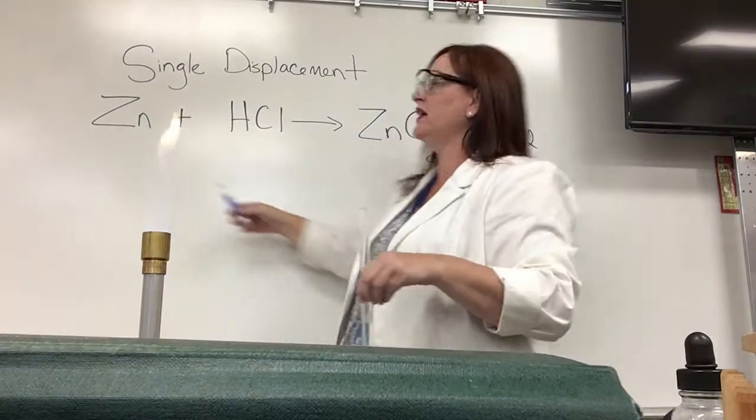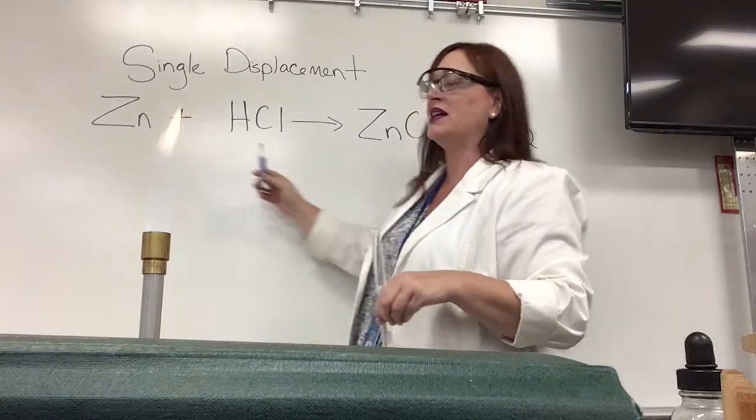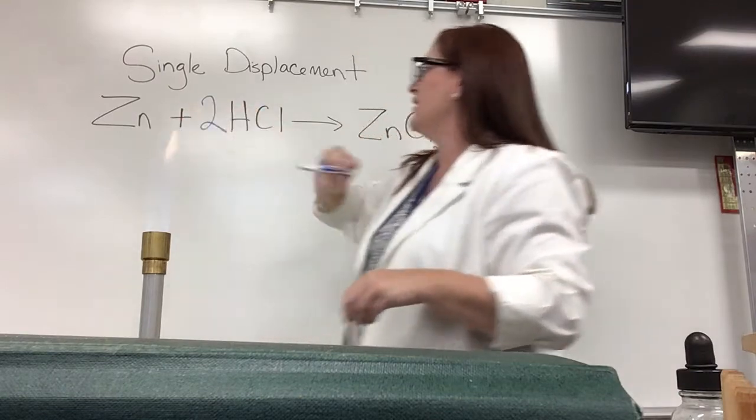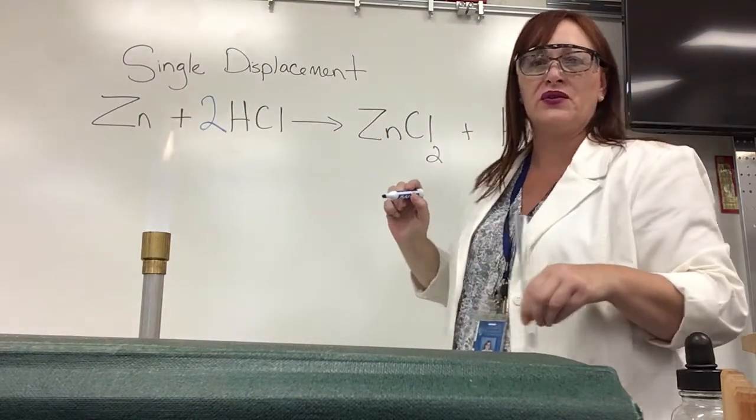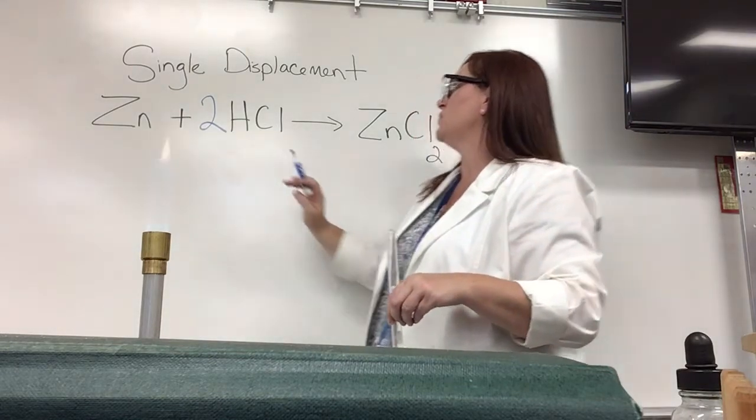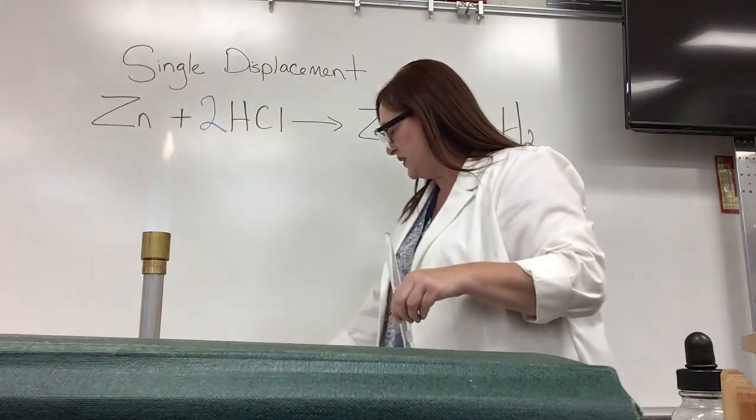Here I have one zinc. Here I have one zinc, so that's balanced. Here I have one hydrogen. Here I have two hydrogens. So I need to go back and have two of those acid molecules and then that also means I have two chlorines and here I have two chlorines. So now it is completely balanced.